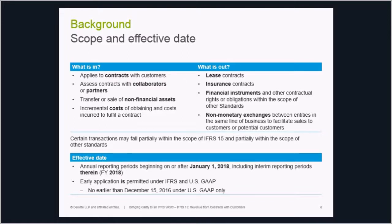The effective date of the standard is annual reporting periods beginning on or after January 1, 2018, including interim periods. Earlier application is permitted under both IFRS and US GAAP. However, US GAAP preparers can only adopt as of the original effective date — annual reporting periods beginning after December 15, 2016.